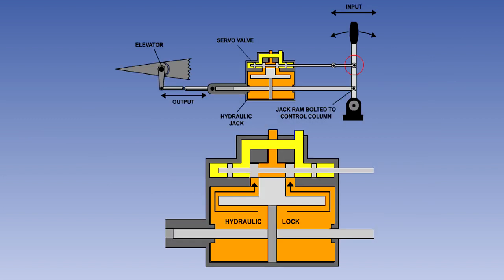With the system in the situation shown here, that is, with the control column central and the flight control in its neutral position, the servo valve will be in a central position, blocking off both the hydraulic pressure and return from the actuator, producing a hydraulic lock across the piston.